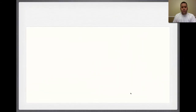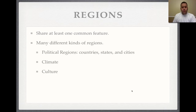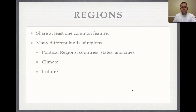The second theme of geography is regions. Regions usually share one common feature. There are different types of common features — political regions, such as country, state, or city. Climate is also part of a region, where areas have the same type of temperature or the same rainfall in the year. The culture of that area can also be one of the attributes.